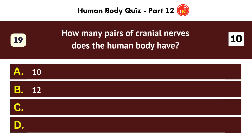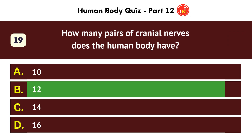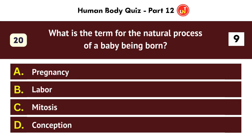How many pairs of cranial nerves does the human body have? 12. What is the term for the natural process of a baby being born? Labor.